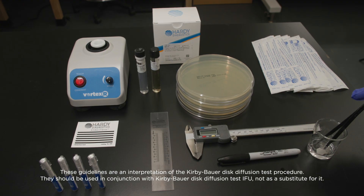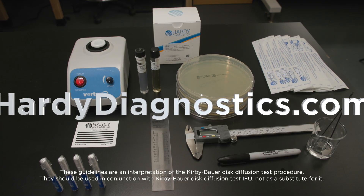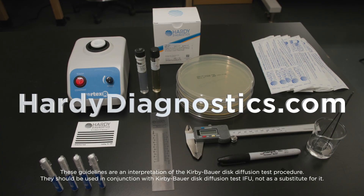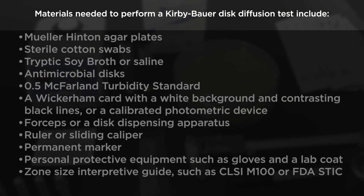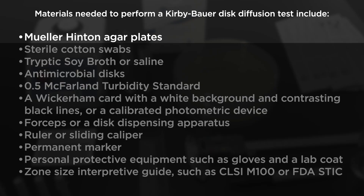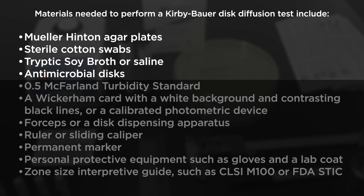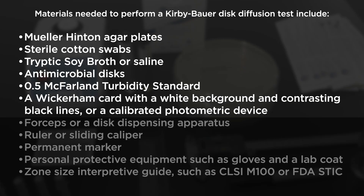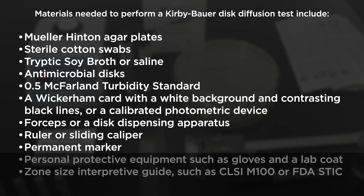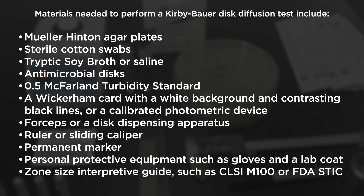Please note that this video is only intended as a guide and is not a replacement for the instructions for use for products referenced in this video, which can be found at hardydiagnostics.com. Materials needed to perform a Kirby-Bauer disc diffusion test include: Mueller-Hinton agar plates, sterile cotton swabs, tryptic soy broth, antimicrobial discs, 0.5 McFarland turbidity standard, a Wickerham card with a white background and contrasting black lines or a calibrated photometric device, forceps or a disc dispensing apparatus, ruler or sliding caliper, permanent marker, personal protective equipment such as gloves and a lab coat, and the CLSI M100 zone size interpretive guide.